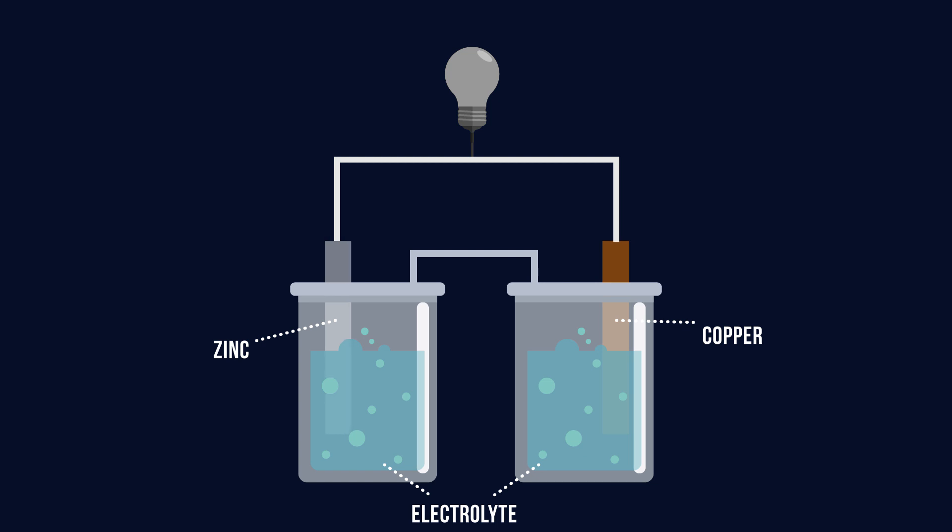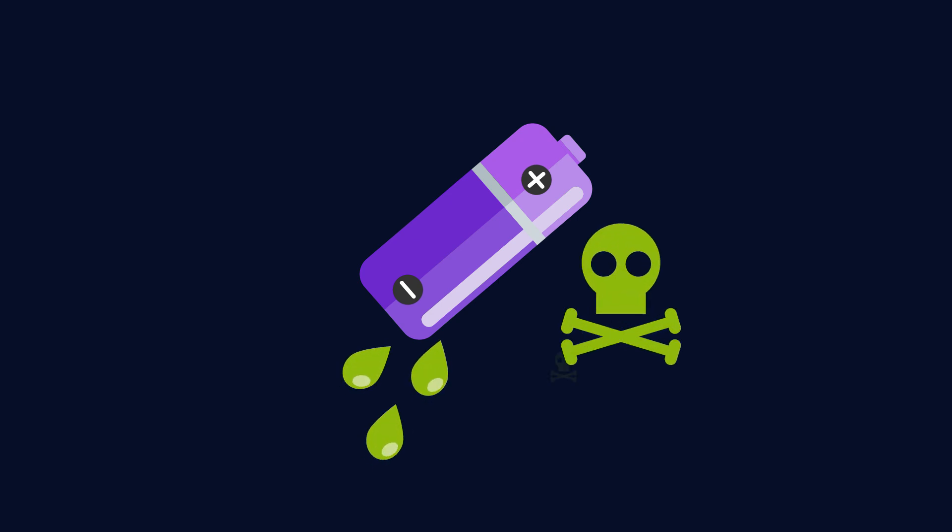But some batteries are rechargeable. If an electric current is supplied from outside to reverse the reaction that normally takes place, eventually though, the chemicals in rechargeable batteries will degrade and hold less and less energy and so will need to be disposed of. Often the chemicals used in batteries are toxic and they can be harmful to the environment.